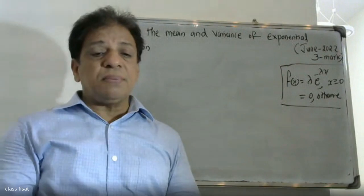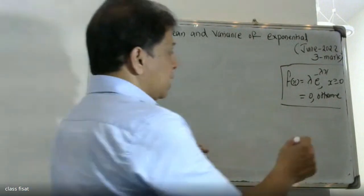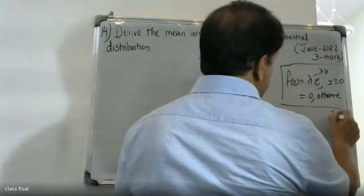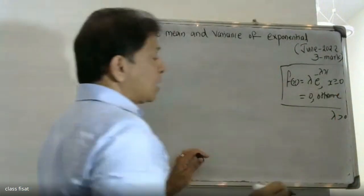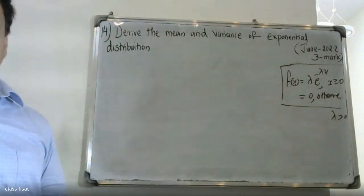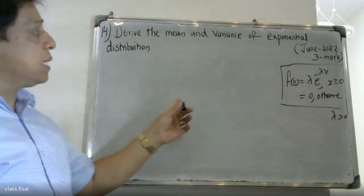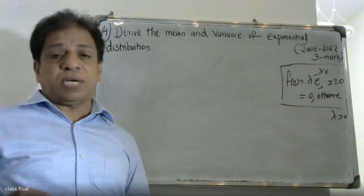Lambda is greater than 0. This is the exponential distribution definition. The exponential distribution mean and variance will now be derived.